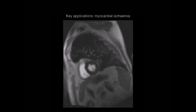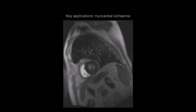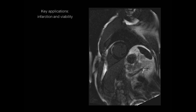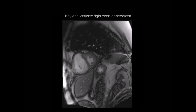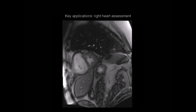CMR offers a high degree of sensitivity and specificity in ischemia assessment. The use of late gadolinium enhancement imaging allows us to identify areas of myocardial infarction, as shown here, and also to assess residual myocardial viability. The right ventricle can be notoriously challenging to assess on echocardiography, but with CMR it's much easier, and CMR offers a gold standard way of assessing right ventricular size and function.